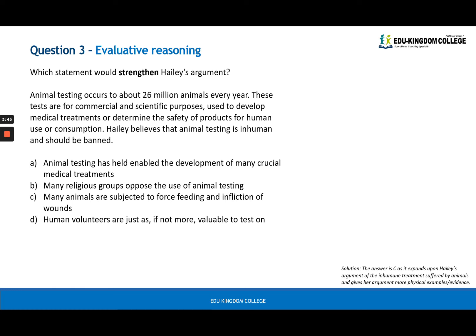Evaluative reasoning. Which one would strengthen Hayley's argument? We know it's about animal testing. And Hayley's main argument is located at the very end. Hayley believes that animal testing is inhuman and should be banned. Inhuman means that it is not ethical. Which of the options would strengthen this idea that animal testing is inhuman? The answer is C. Many animals are subjected to force feeding and infliction of wounds. So this basically shows the extent of the inhuman treatment that Hayley believes in and that comes with animal testing. So C gives more evidence to that and will strengthen the argument.